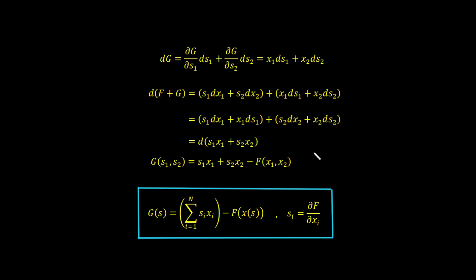There's no real difference from what we've seen previously. For the one-variable Legendre transform, g of s equaled s·x minus f of x. All we've done is extend this to a function of two variables: instead of s·x, we now have s1·x1 plus s2·x2, and instead of f of x, we have f of x1 and x2.